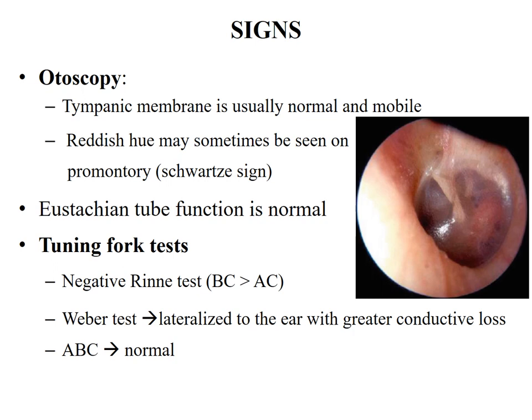Signs on otoscopy: the tympanic membrane is usually normal and mobile; however, a reddish hue on the promontory may be visible through the tympanic membrane, known as Schwartz sign. The Eustachian tube function is normal. Tuning fork tests will show conductive hearing loss: Rinne's test will be negative — bone conduction greater than air conduction. Weber test will lateralize to the ear with greater conductive deafness, and absolute bone conduction will be normal.